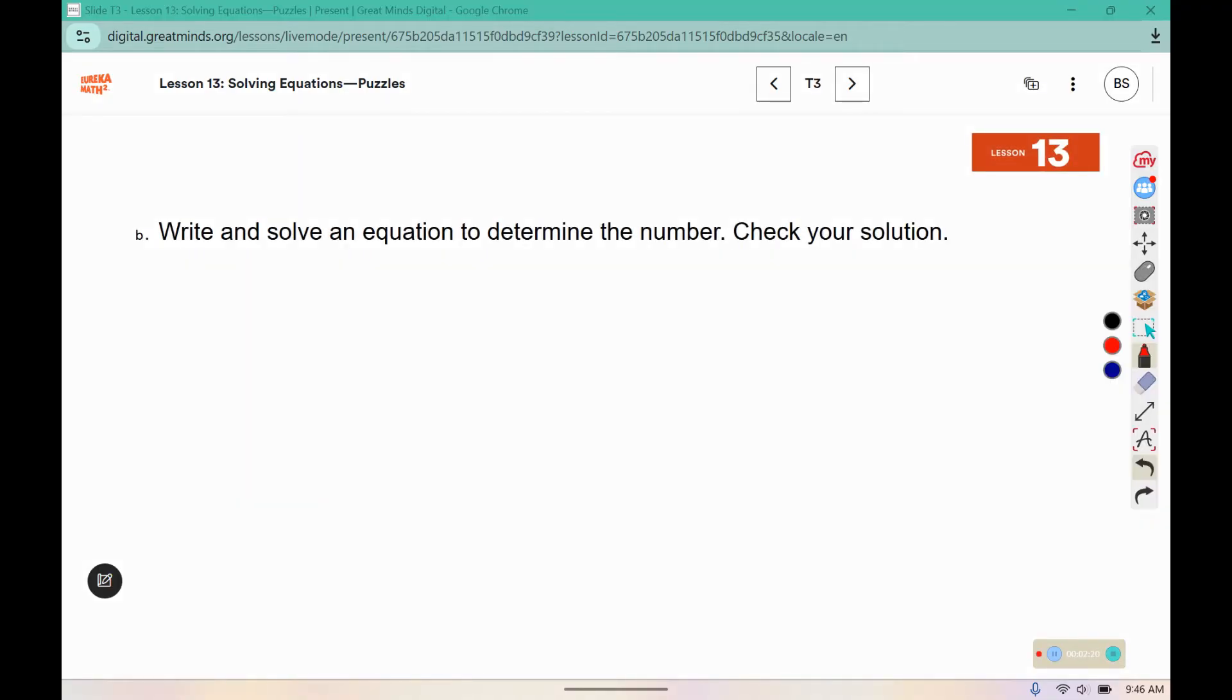We are going to write and solve an equation to determine the number and check your solution. So here, our unknown number we can call x. Then we're going to multiply that number by 4, so 4x, and add negative 4 to it. Then we're going to take a third of the sum, so not a third of just the 4x, not a third of the negative 4, but a third of the whole sum. And our answer should come out to negative 6.